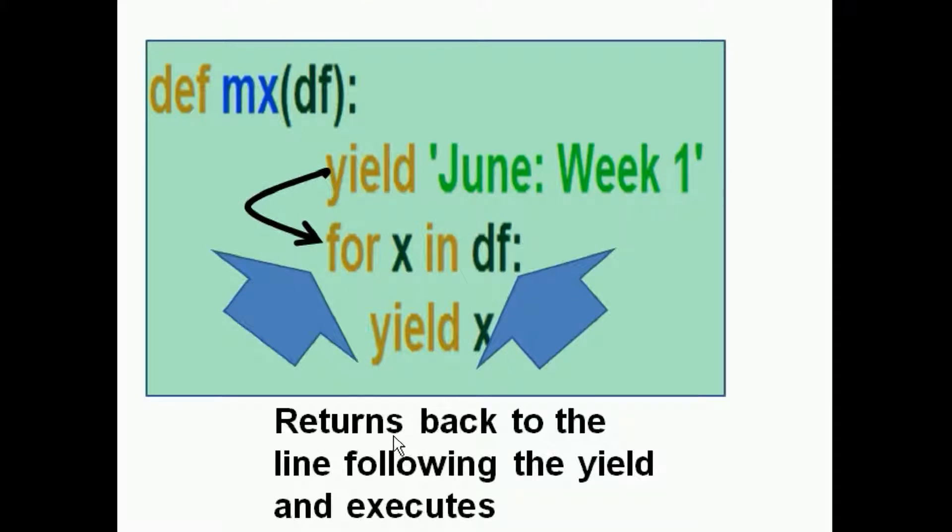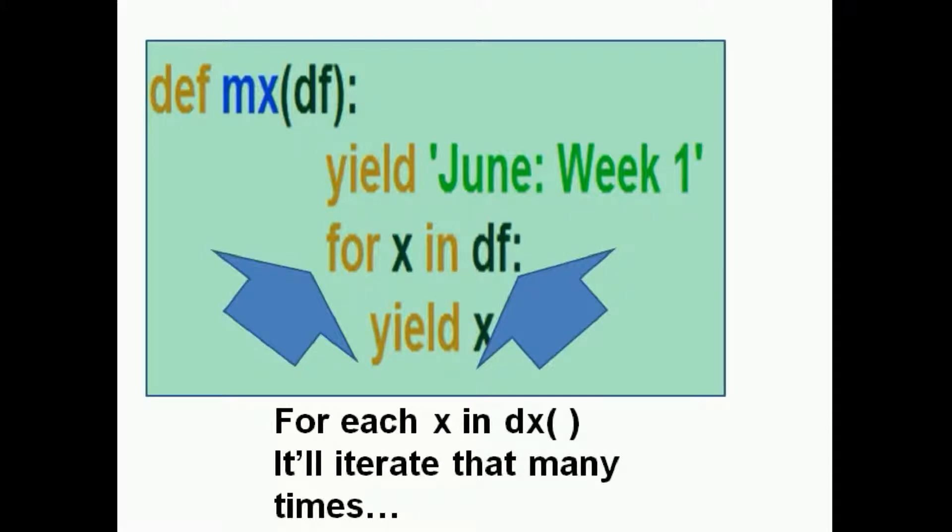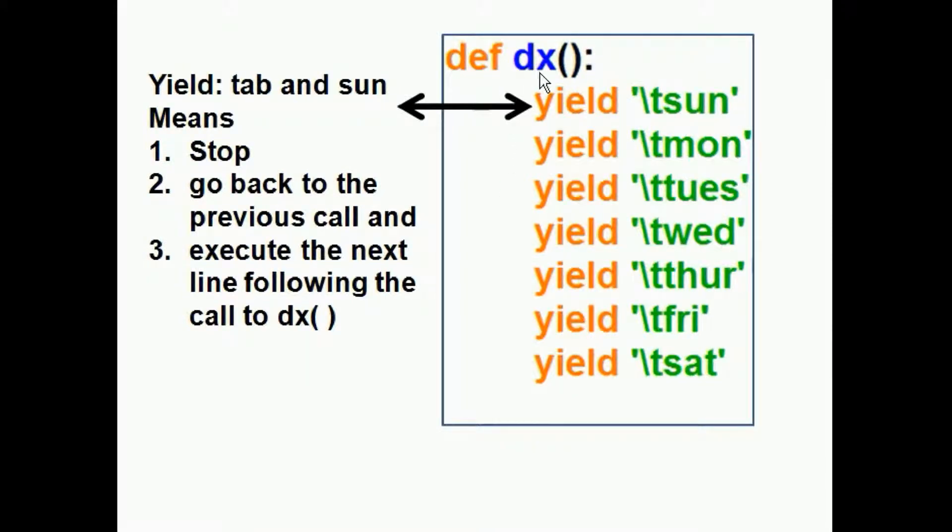Now, immediately, it returns back to the line following the yield, this guy here, and executes it, which is our loop for X in DF. For each X in DX, the DX function, which is stored here in the DF variable, it'll iterate that many times. So it calls the DF function right here, on this spot here. And here's the DX function.